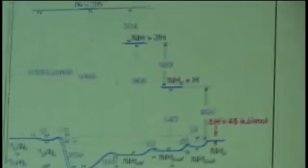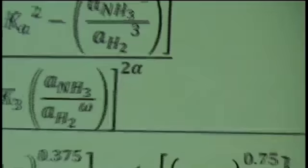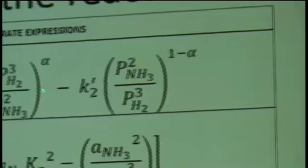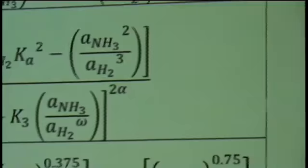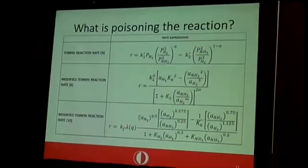This is a historical perspective of the reaction rates that are out there that we use to model the reactors. A little bit of a review of the rate expressions shows us that we have ammonia and hydrogen in the denominator of the rate expressions. When they are modified in order to fit the data better, we still have ammonia and hydrogen in the denominator. If they are in the denominator means that they are poisoning the reaction.